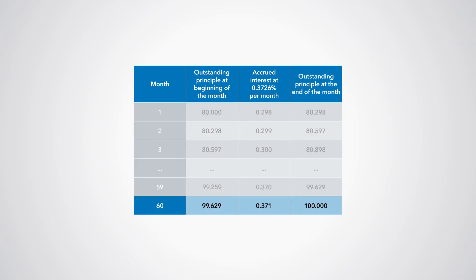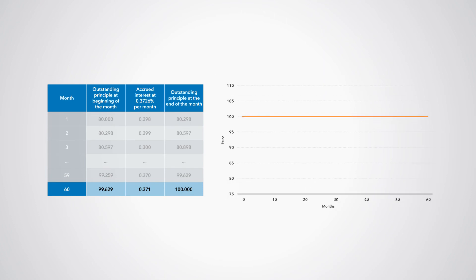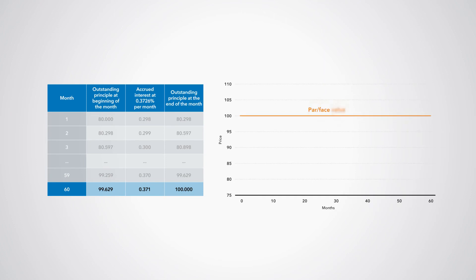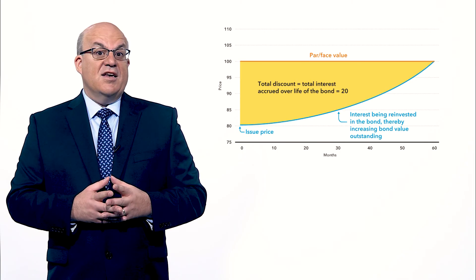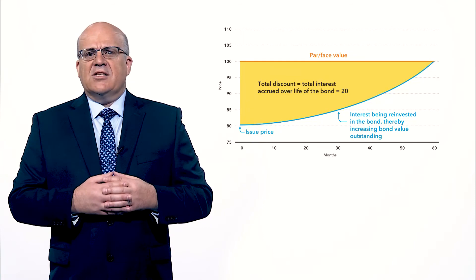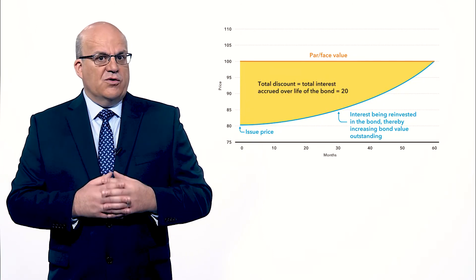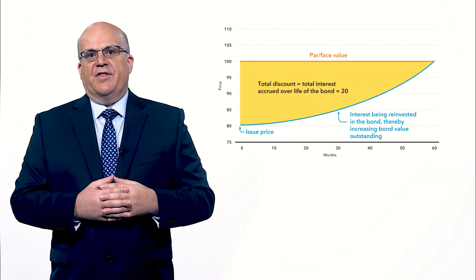At the end of month 60 — in other words after 5 years — the value of the outstanding principal is 100, which is equal to the par or face value. The total interest accrued from the discount on the debt security is 20, which is 100 minus 80. Note that this accrued interest of 20 excludes any possible coupon interest payments; those would be an additional interest component if it was not a zero coupon bond. Interest accrued but not yet paid is one of the factors that determine the nominal value of a debt instrument, regardless of whether this interest is from a discount, a premium, or a coupon.